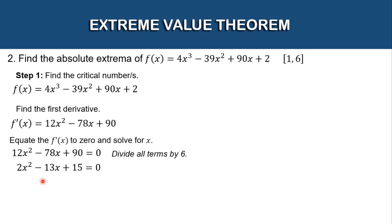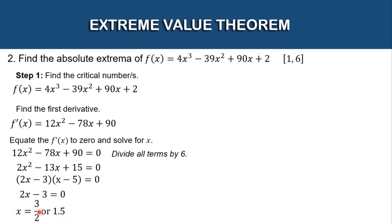To solve for x, we factor this: (2x − 3)(x − 5) = 0. Equating each factor to 0: for 2x − 3 = 0, we get 2x = 3, so x = 3/2 or 1.5. For x − 5 = 0, we get x = 5. These two are our critical numbers.